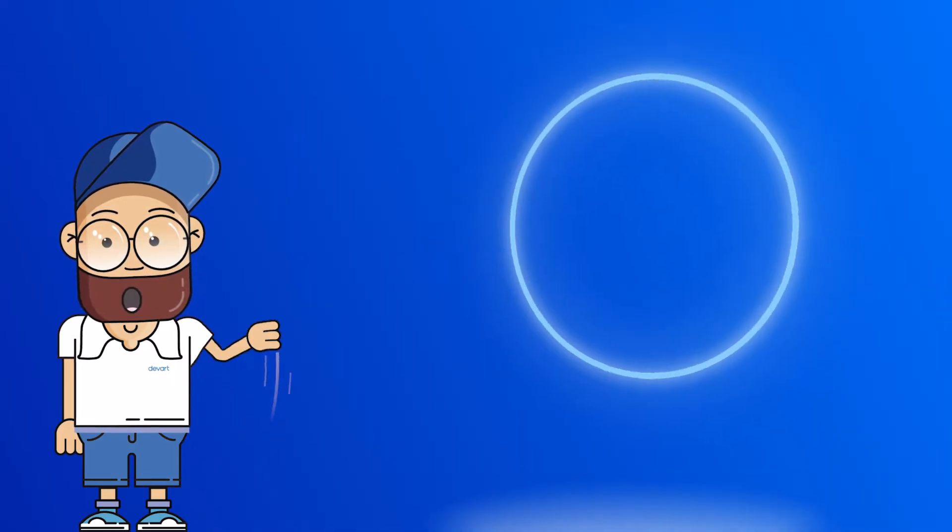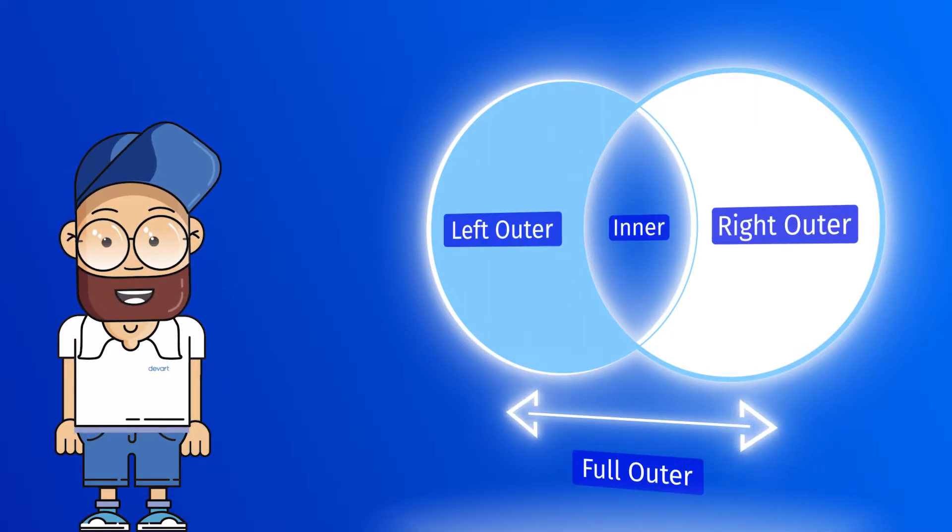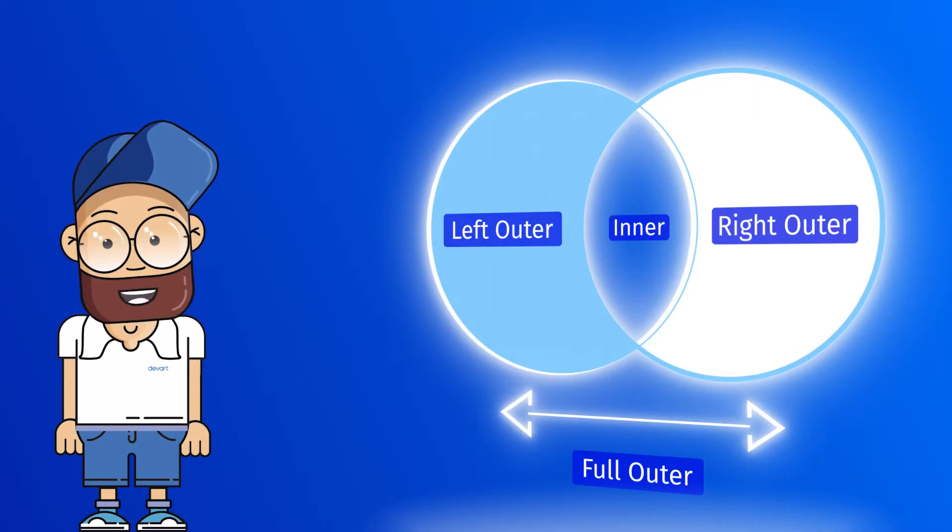Super! Now let's take a look at the full outer join, that combines the results of both left and right outer joins, and returns all rows from the tables on both sides of the join clause. In case there is no match, a record will contain null.